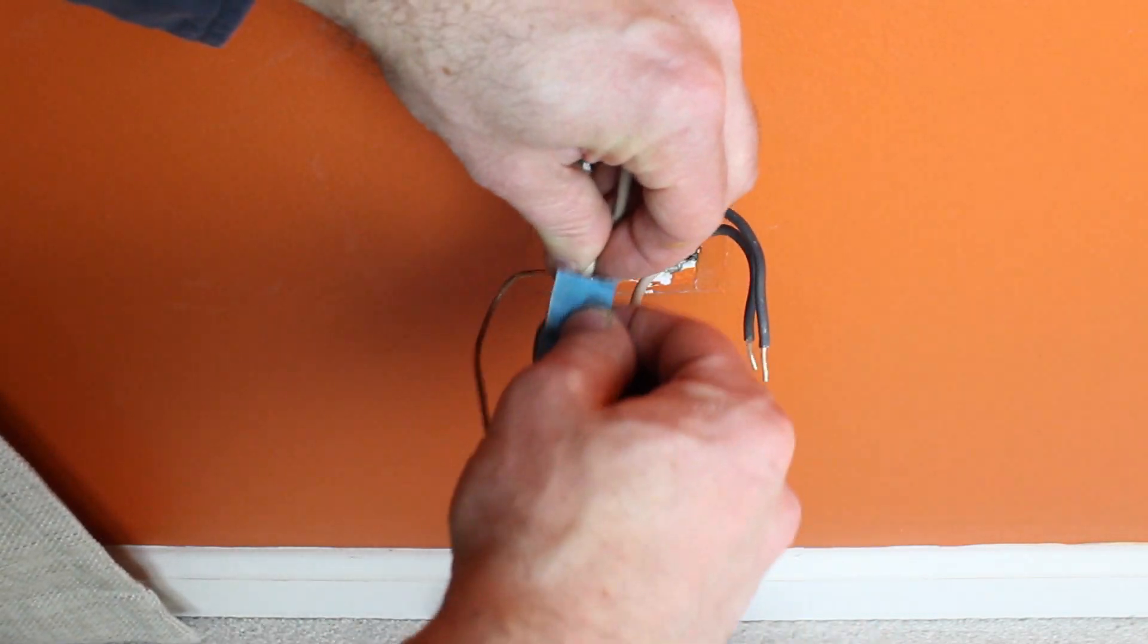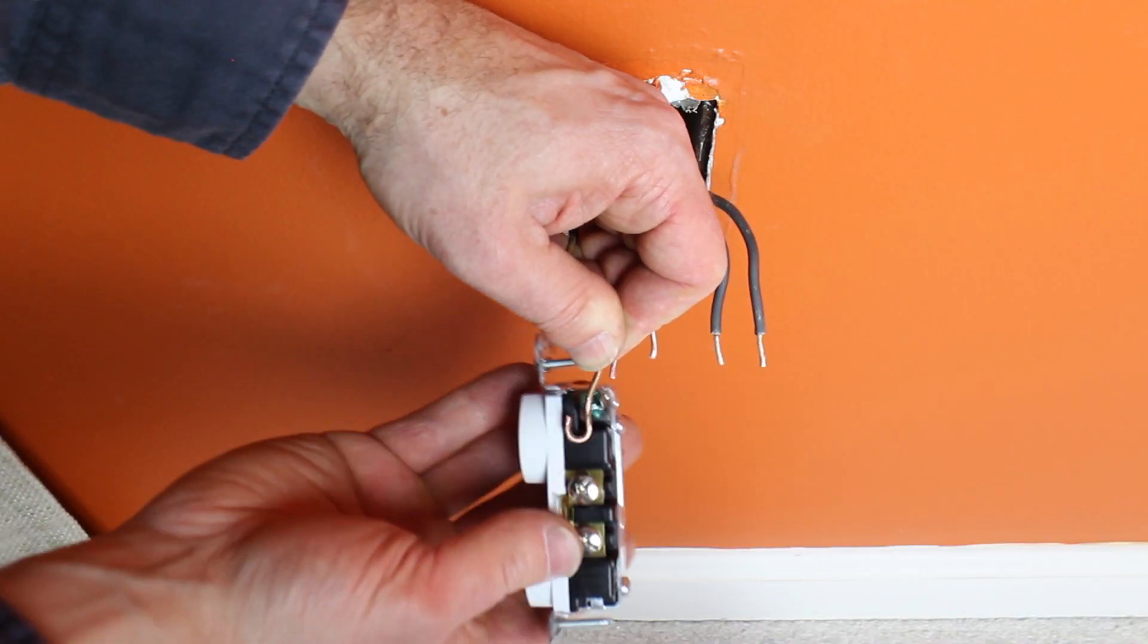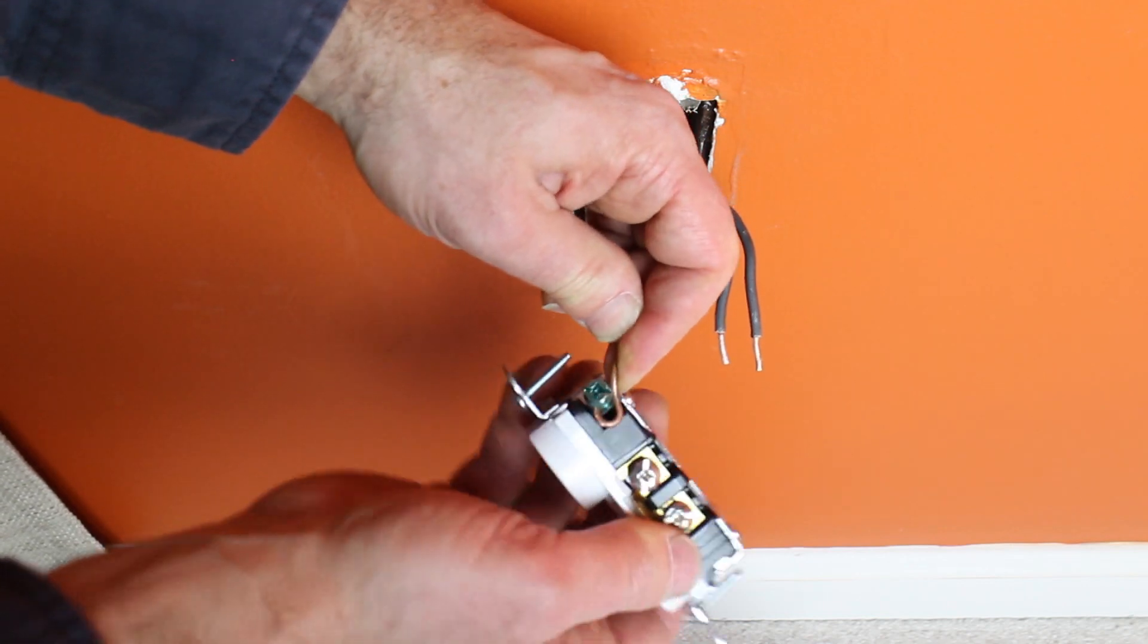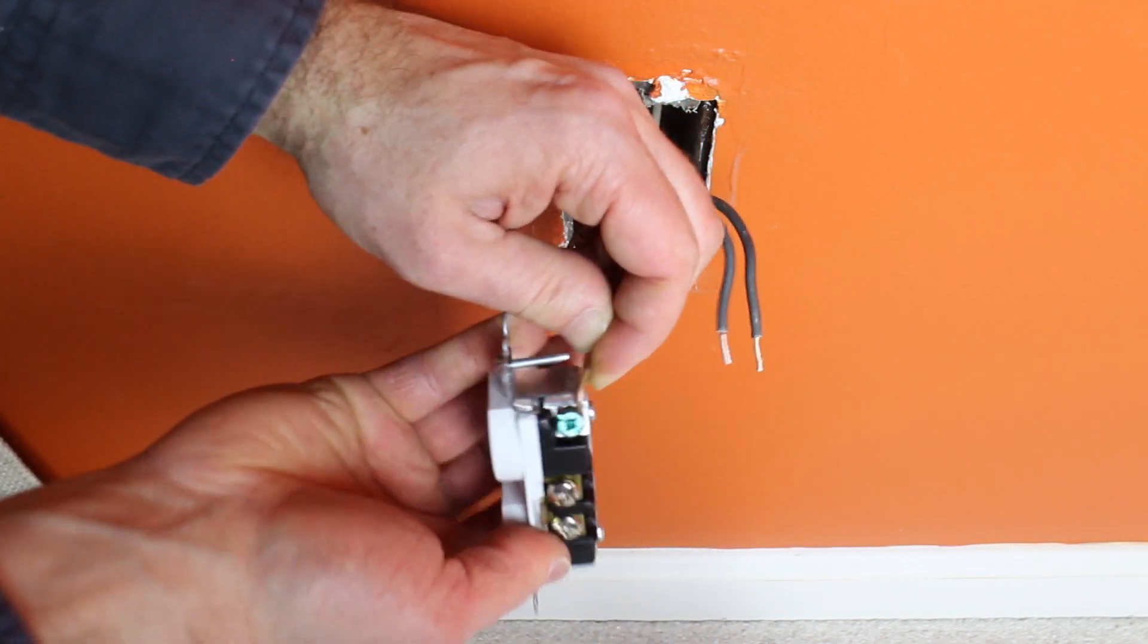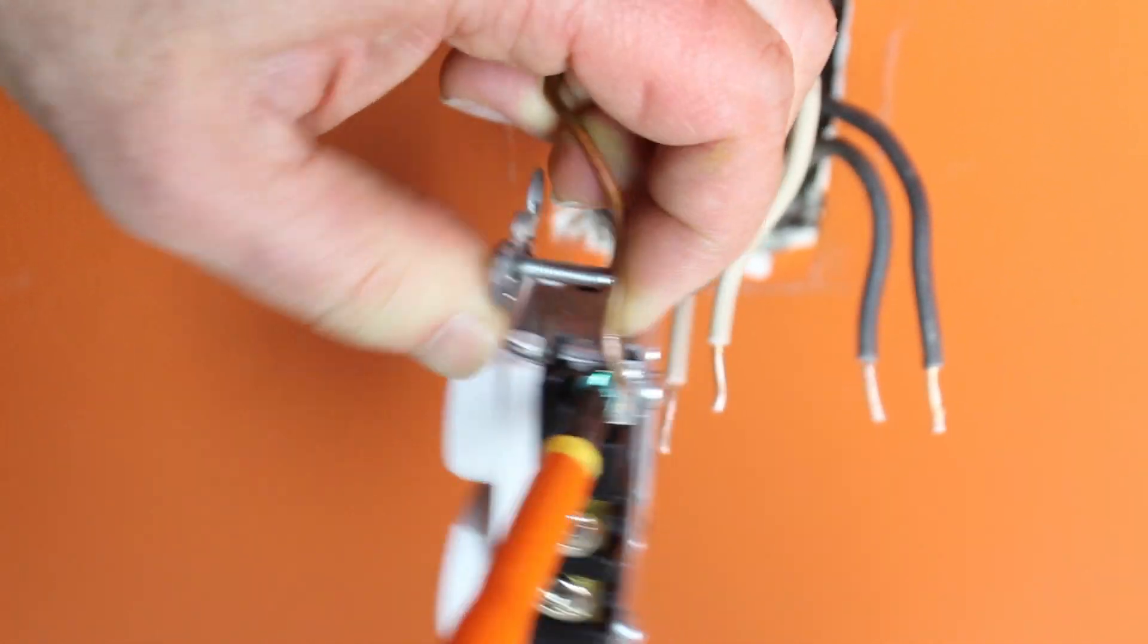Wire up the ground wire first to the green terminal screw. Make sure it's looped around clockwise and then tighten down that green terminal screw.